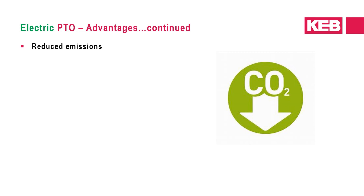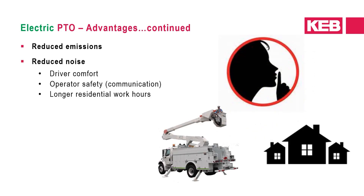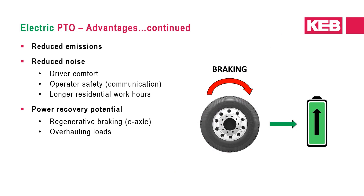Decoupling auxiliary loads and running the engine at a more efficient operating point leads to the fourth benefit: reducing emissions. Further benefits also include reduced noise, which allows for increased operator comfort, better operational safety such as communicating when equipment is operating, and the opportunity to operate equipment for longer hours in residential areas. Another benefit of EPTO is the potential for power recovery — for example, regenerative braking from an E-axle or backdriving a pump from an overhauling load such as lowering a hoist crane — to capture energy otherwise wasted to charge and power the electric PTO system.